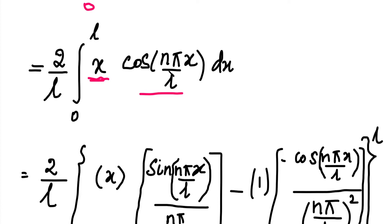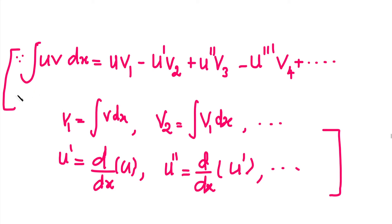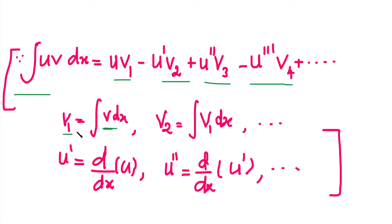Bernoulli's formula states: integral of u*v dx equals u*v1 minus u' * v2 plus u'' * v3 minus u''' * v4 plus etc., alternating positive and negative. Here v1, v2, v3, v4 are successive integrals of the second function, and u', u'', u''' are successive derivatives of the first function. We integrate the second function and differentiate the first function.